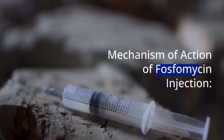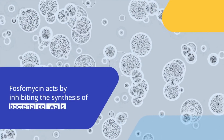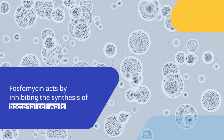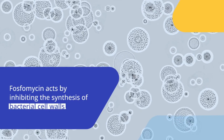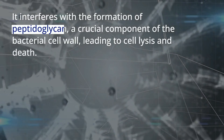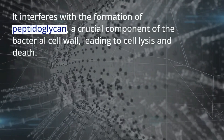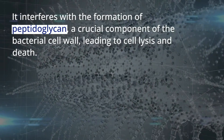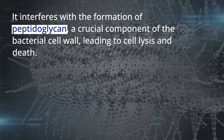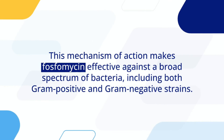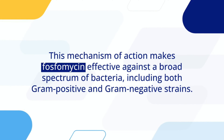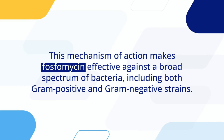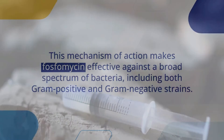Mechanism of action of fosfomycin injection: fosfomycin acts by inhibiting the synthesis of bacterial cell walls. It interferes with the formation of peptidoglycan, a crucial component of the bacterial cell wall, leading to cell lysis and death. This mechanism of action makes fosfomycin effective against a broad spectrum of bacteria, including both gram-positive and gram-negative strains.